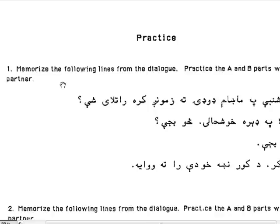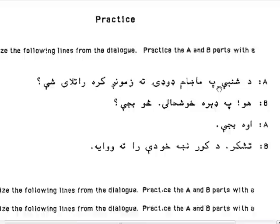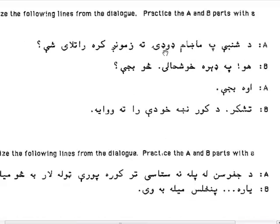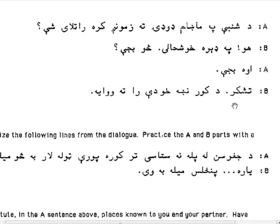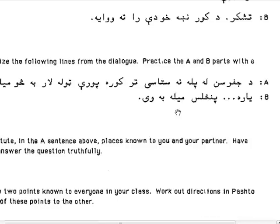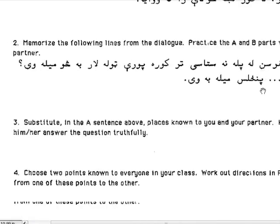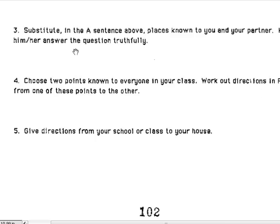These are some practice words and sentences. Memorize the following lines from the dialogue — Practice A and B parts — with a partner or friend: Dushambe pa makham doday ta zmu krah ratlaiche. Wa pa dayra khushali. So baje? Uwa baje. Tashakur. Dukur nikha khudei ratata wawaya. Memorize these and practice with a friend. Please read this on your own. I'll see you next time.